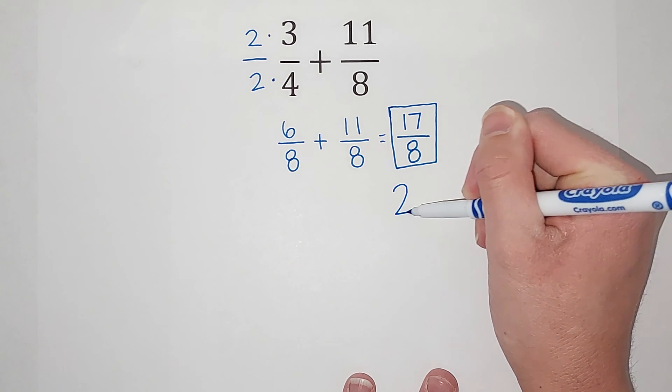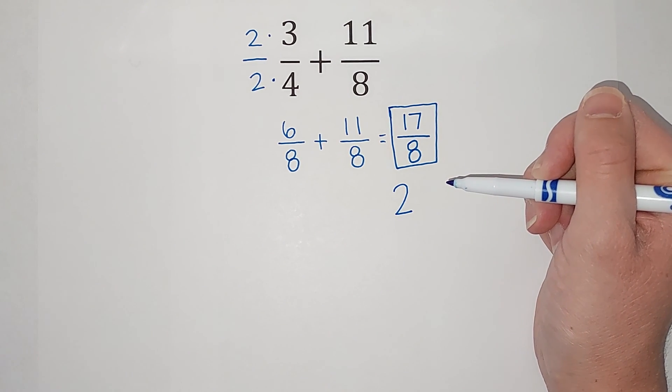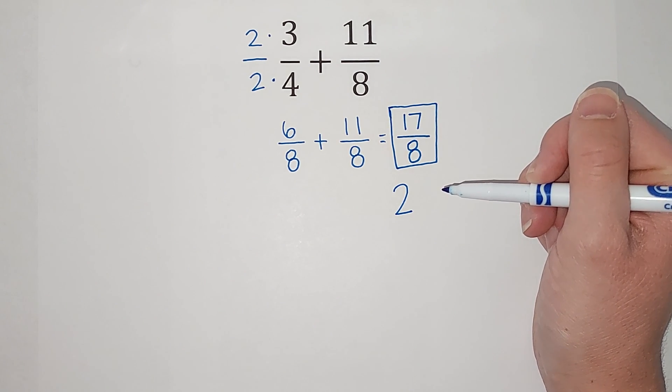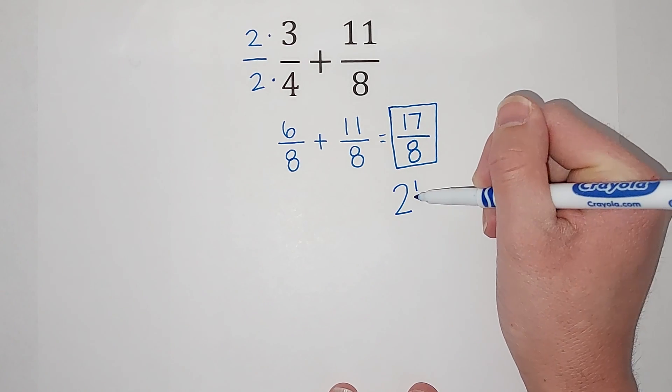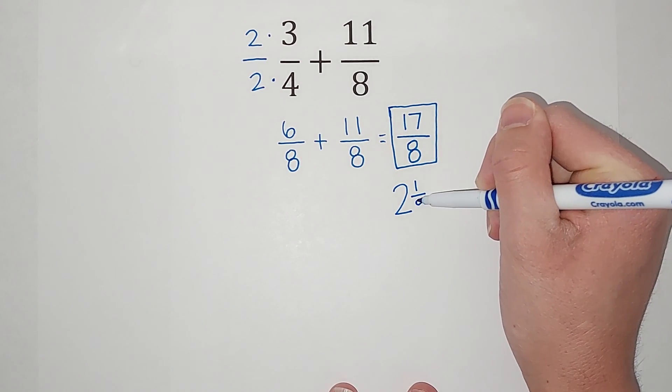Well, it goes in twice, because two times eight is 16. So we have one left over to get to that 17. And then my denominator is still eight.